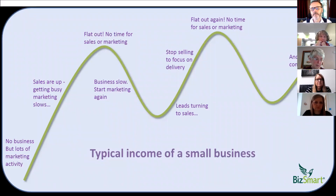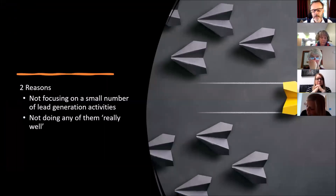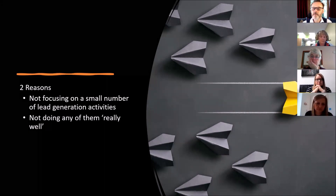We all know about the typical peaks and troughs in business development — we get busy, take our foot off the gas, things slow down, then we need to rebuild momentum. What we want to do is smooth that out. There are two key reasons why most don't manage predictability, and the first is not focusing on a small number of lead generation activities.